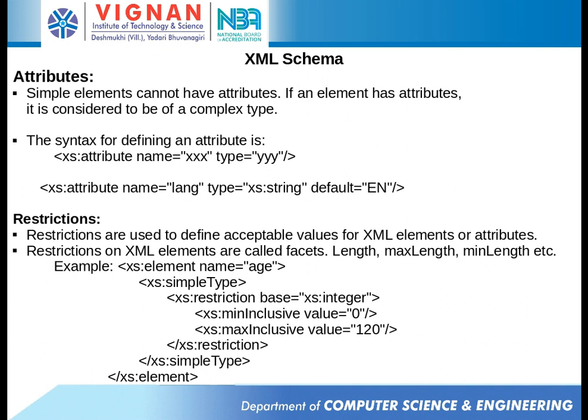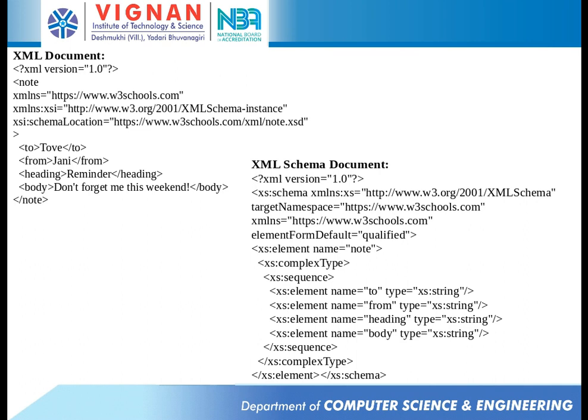If somebody enters a value like 1000 it should not be accepted. In that case we specify it with a tag called 'restriction', where for age the base data type is integer. Under this restriction tag we specify the possible facets — in this case, minInclusive value of age should be 0 and maxInclusive should be 120. This is how restrictions on the basic data types are specified.